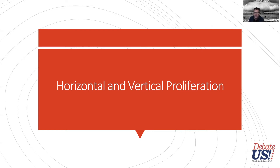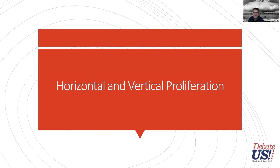There's vertical proliferation and horizontal proliferation. Vertical proliferation is usually referred to as an arms race — that's where countries that already have nuclear weapons develop more. Horizontal proliferation is when nuclear weapons spread amongst more countries. Right now there are eight nuclear powers; if we go to nine, ten, or eleven, that's horizontal proliferation. I won't really talk about vertical proliferation today.